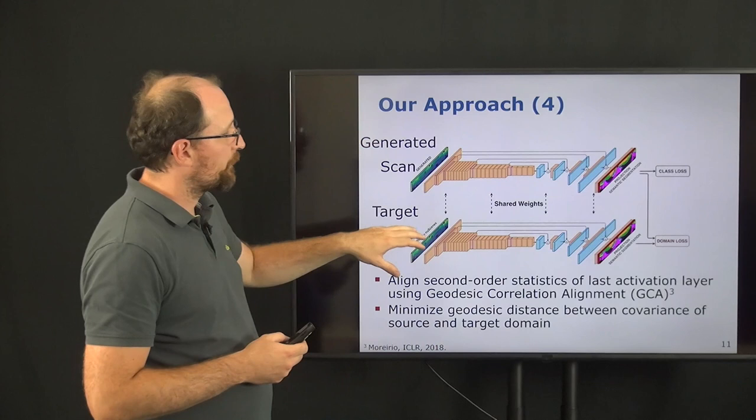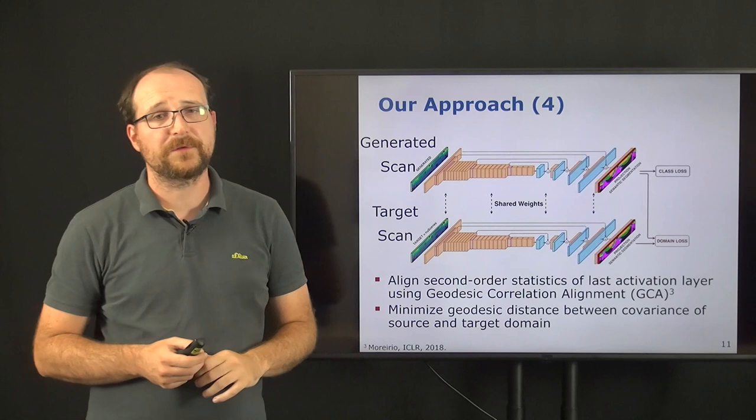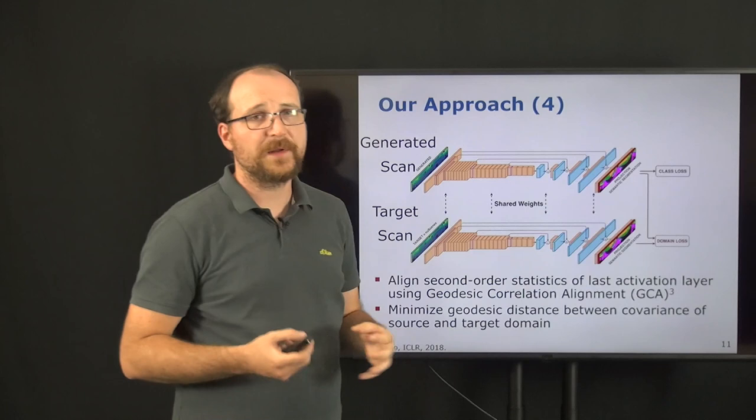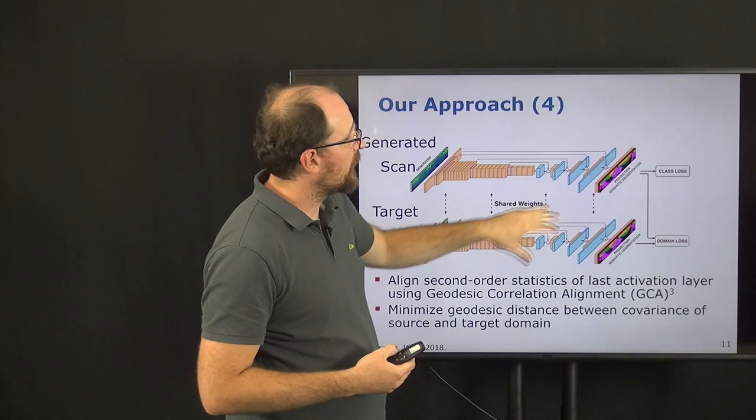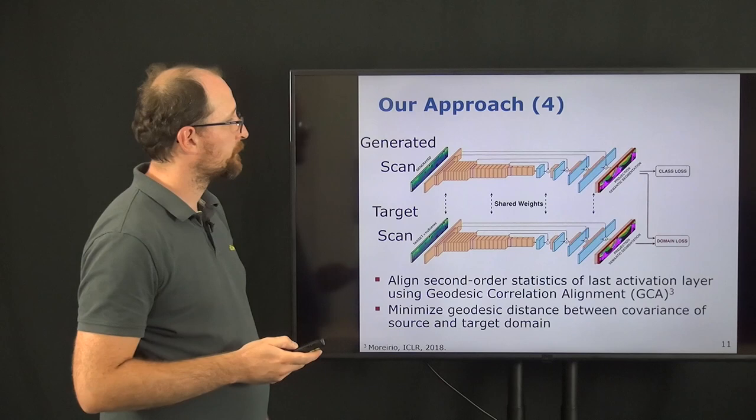And for this, we then get a so-called domain loss, which is then the geodesic distance between the covariances of the source and target domain layers, so that we further align the feature representations in the last layers of the network, such that they look similar to the target domain.